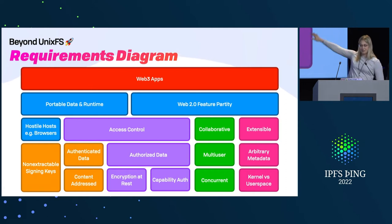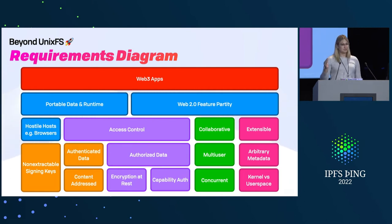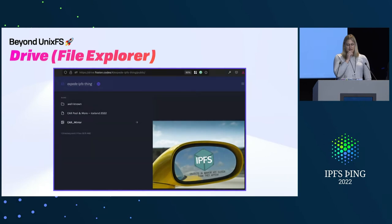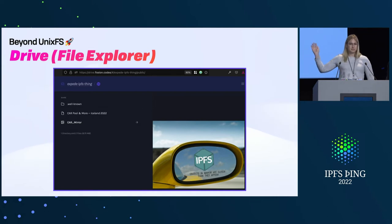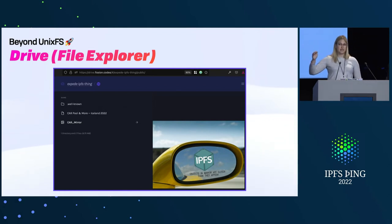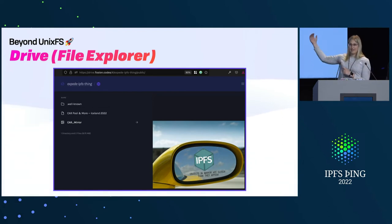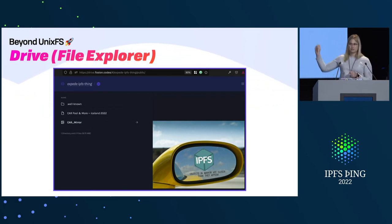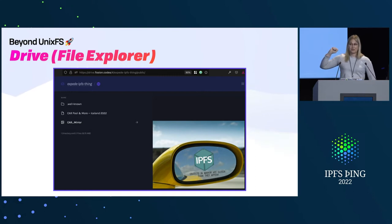That requires all the stuff below that, like access control and being extensible and collaborative and working in hostile places like browsers. Ideally, we also want users to control their own data and be able to use data across applications. You should be able to pull up a file explorer, and if you've written a JSON file in one application, you should also be able to explore that inside a file explorer separately — just like on Windows or macOS. Today we have an implementation for the browser, and we are rewriting it in Rust and WebAssembly so that it'll run absolutely everywhere.